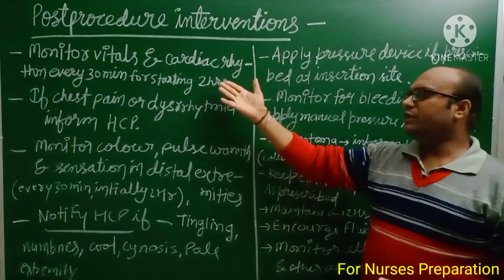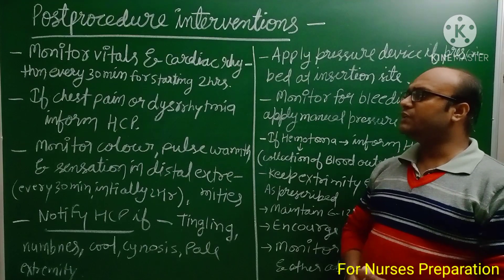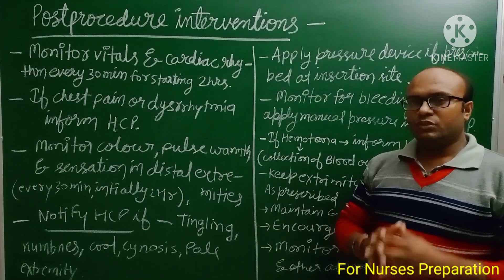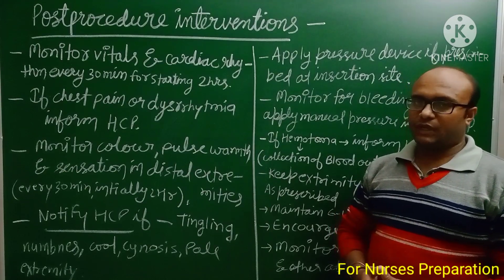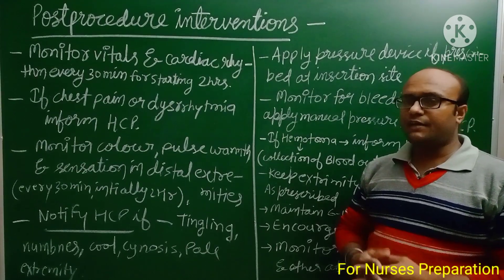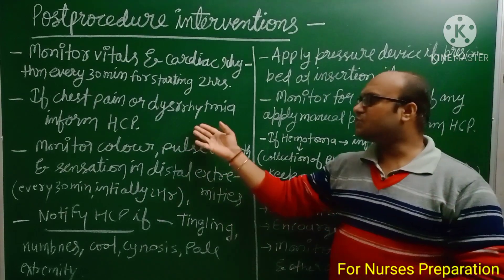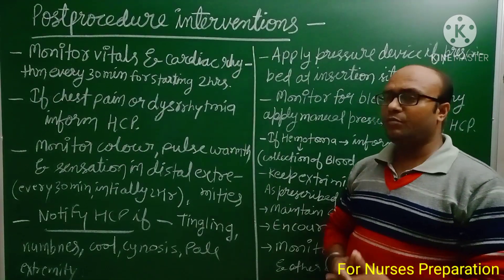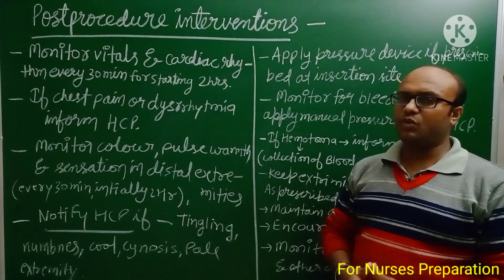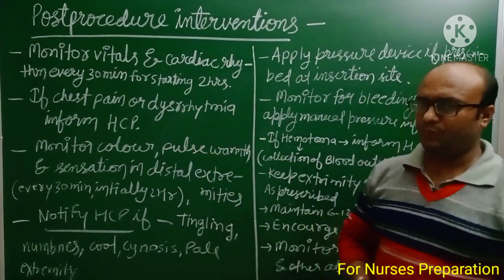Now, post-procedural interventions. Monitor vital signs and cardiac rhythms every 30 minutes for the initial 2 hours after cardiac catheterization. If the patient is having any chest pain or dysarrhythmia — abnormal heart rhythms — inform the healthcare provider immediately.